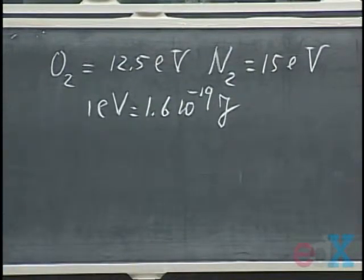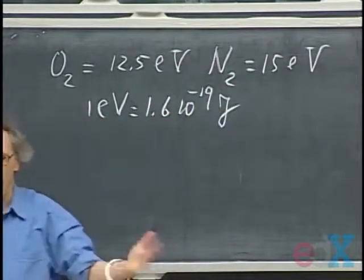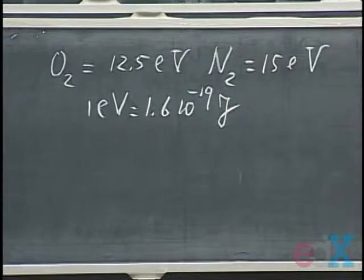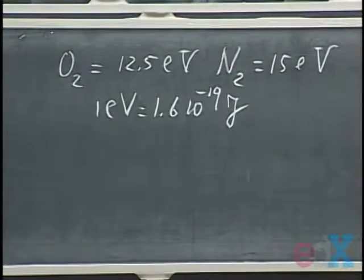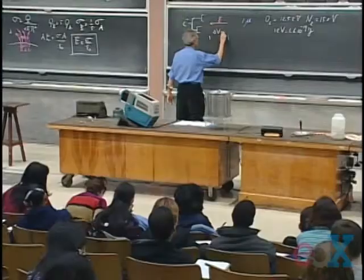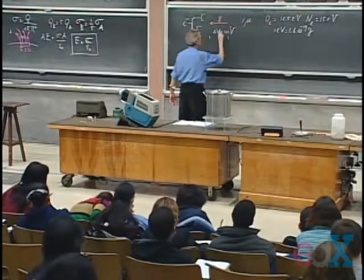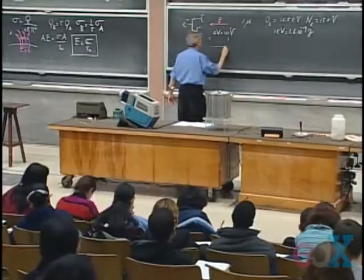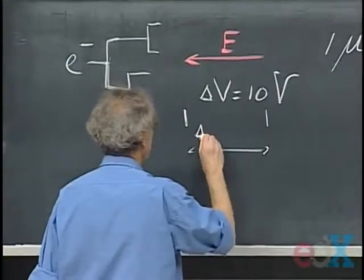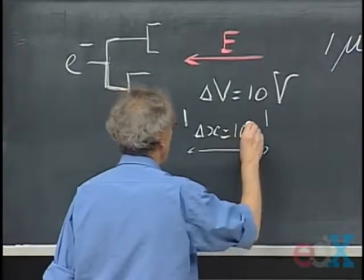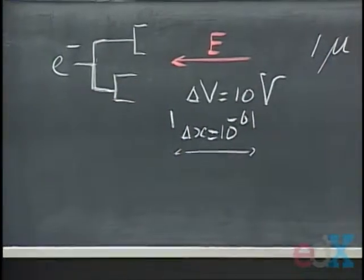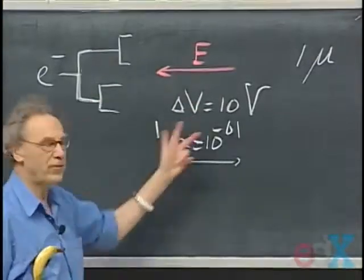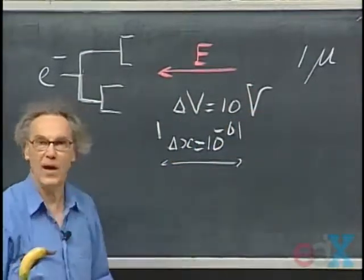And so, what it means then, let's assume that this number is 10 electron volts. We only want a back-of-the-envelope calculation. So we want the electron to move over a potential difference ΔV, which is roughly 10 volts, and we want it to do that over a distance Δx, which is 10^-6 meters. That's your one micron. And if that happens, you get enough kinetic energy in the electron to cause an ion.